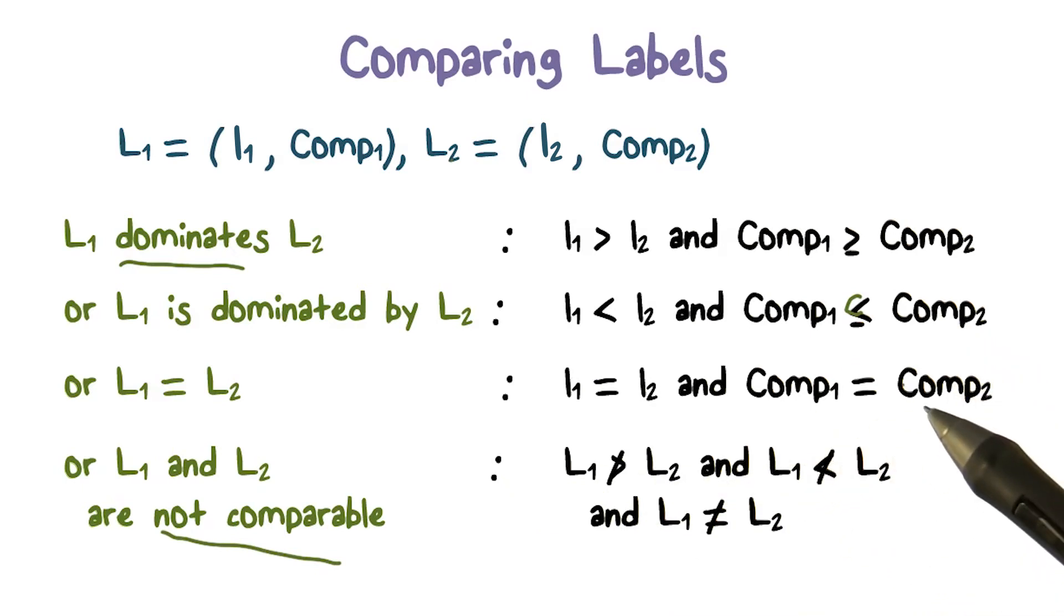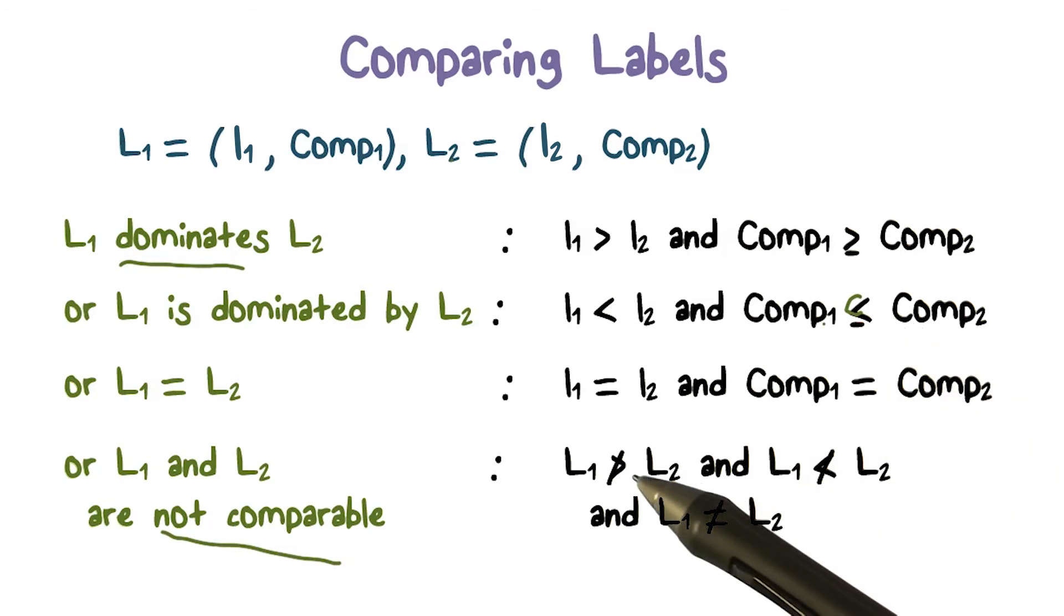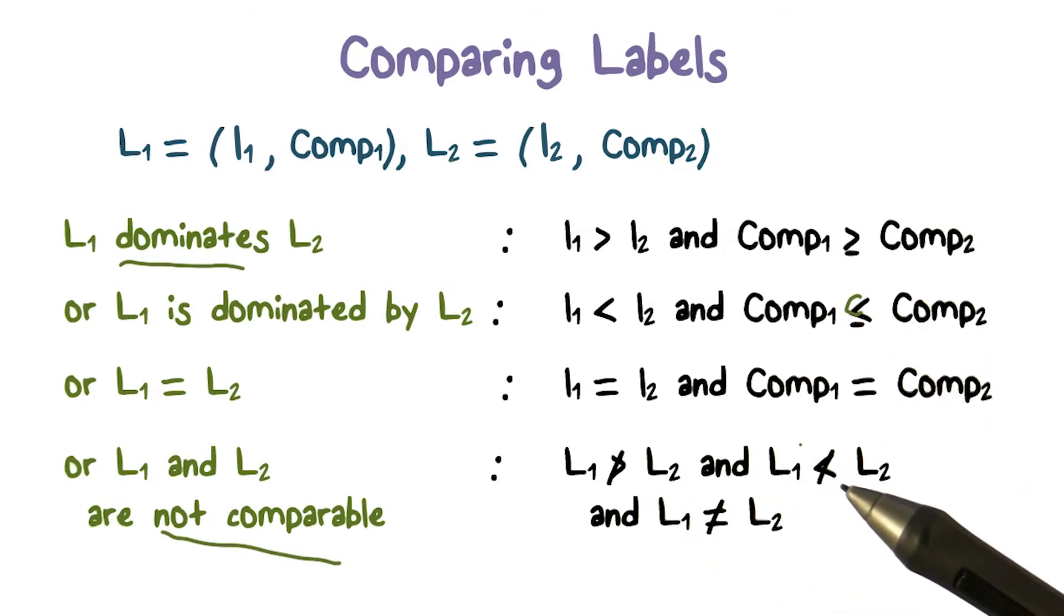It's actually going to be because the compartments are sets. And these sets are going to be, neither one is going to be contained in the other one. So they each had some elements the other one doesn't have. And because of that, this containment property is not going to be satisfied. And because of that, neither of these are going to be holding. And when they don't, then we say that these labels are not comparable.